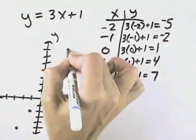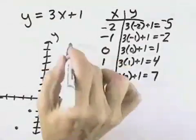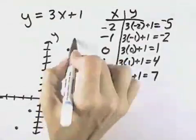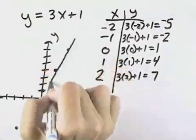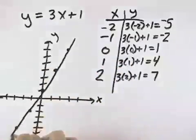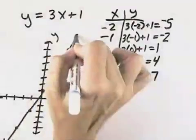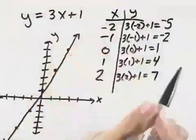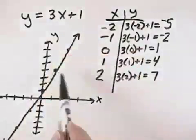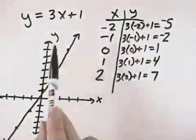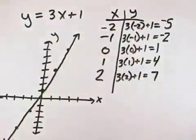And then we try to draw a straight line through these points — and that straight line, draw it as straight as you can — and that would be the line that represents the graph of this equation.